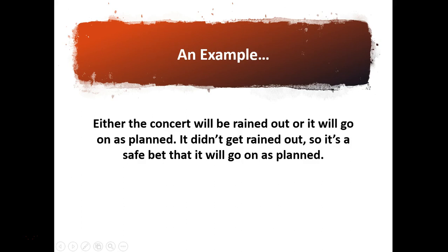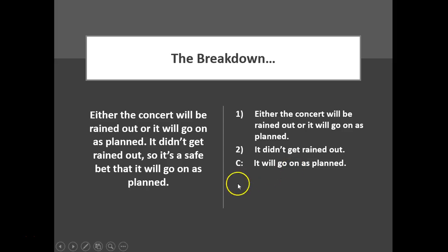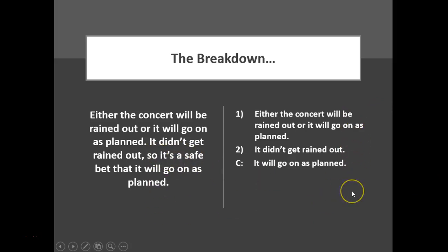Either the concert will be rained out, or it will go on as planned. It didn't get rained out, so it's a safe bet that it will go on as planned. Here's the breakdown: either this is going to happen or this is going to happen; as it turns out, this didn't happen; therefore, the concert will go on as planned. Trim out what is unnecessary — just make the claims. Claim, claim, conclusion.